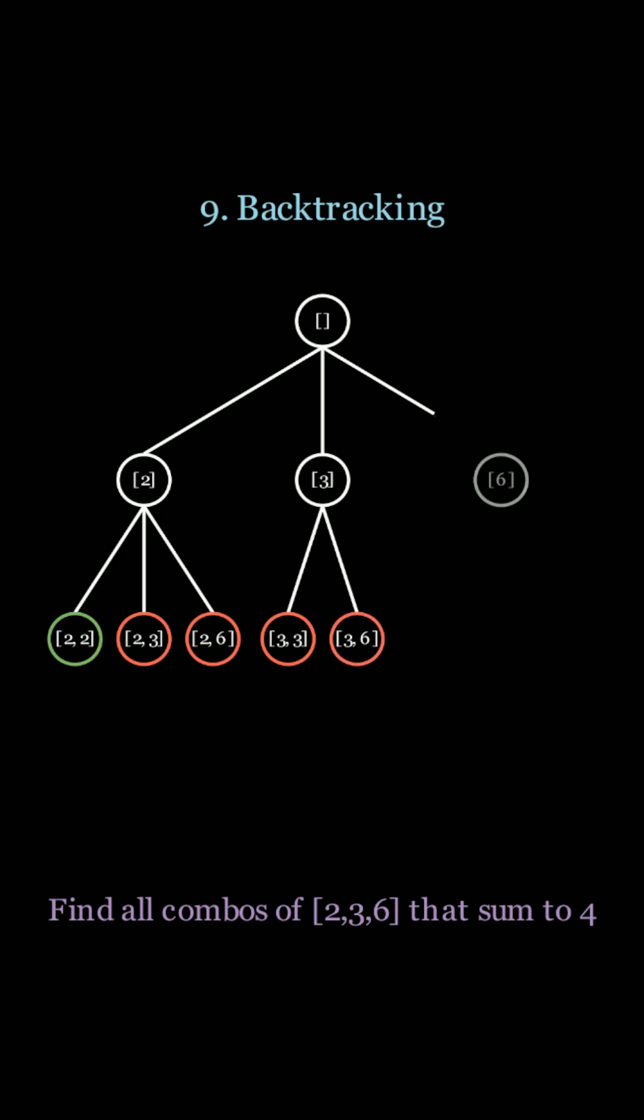3 plus 6 is 9, which is greater than 4, so we prune it. And likewise, the final element is 6, which is greater than 4, so we prune all of these branches resulting in a more efficient algorithm.